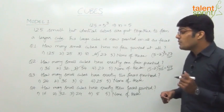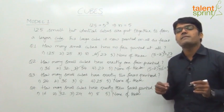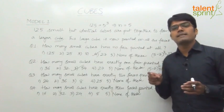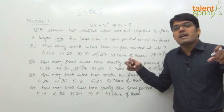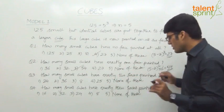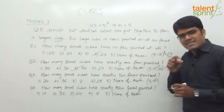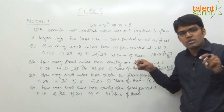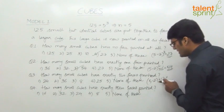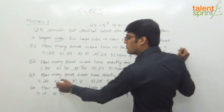Question 3: How many small cubes have exactly two faces painted? Cubes with two faces painted exist on the edges. A cube has 12 edges. Each edge has 5 cubes but we remove the 2 corner ones, giving N−2 = 3 per edge. So the formula is (N−2) × 12 = 3 × 12 = 36. The answer for Question 3 is option 2: 36.